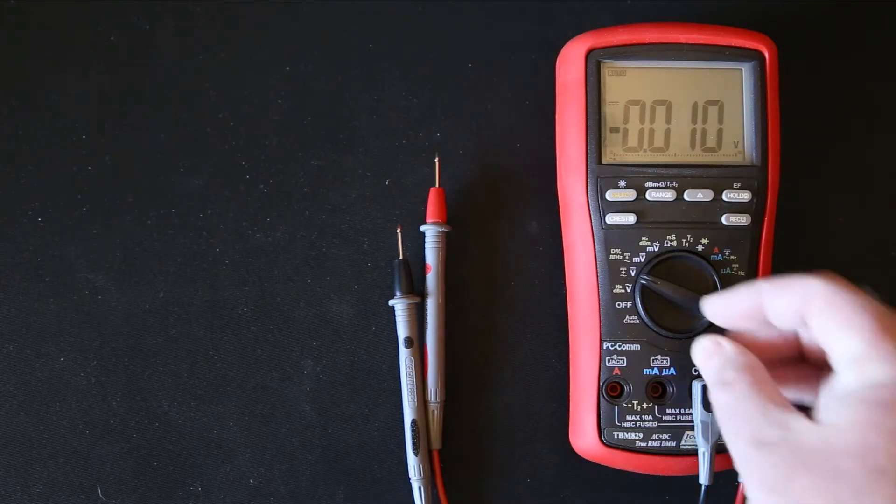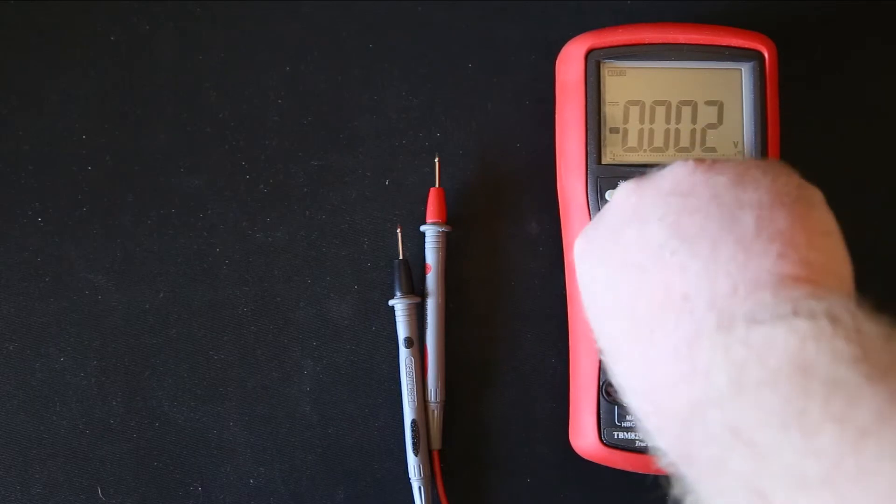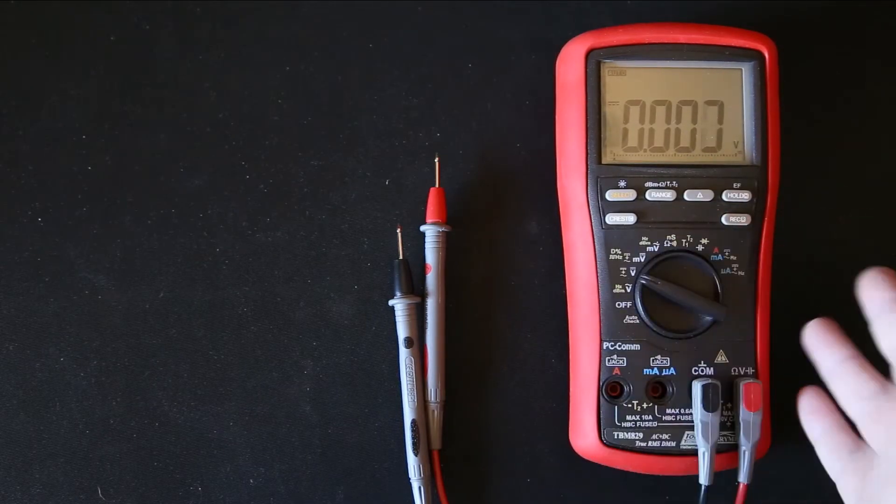That concludes the very brief tutorial on using a digital multimeter for volts, currents, amps, etc.